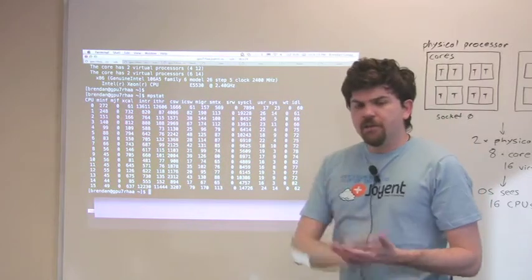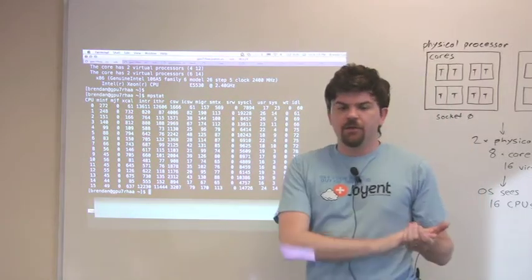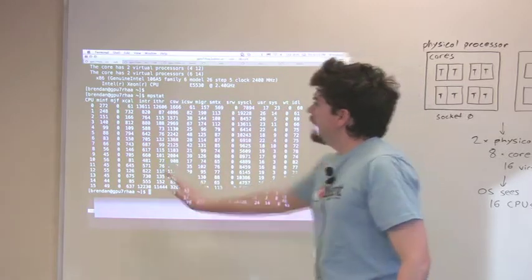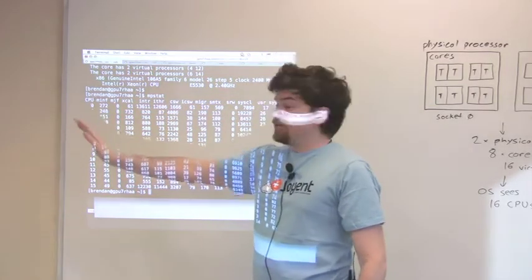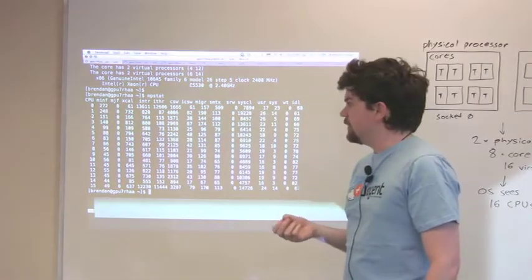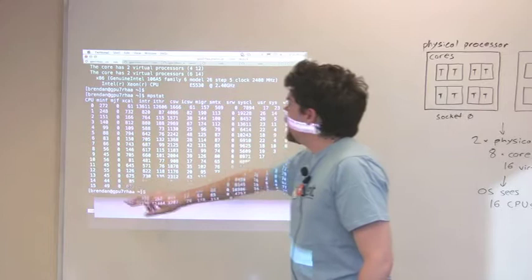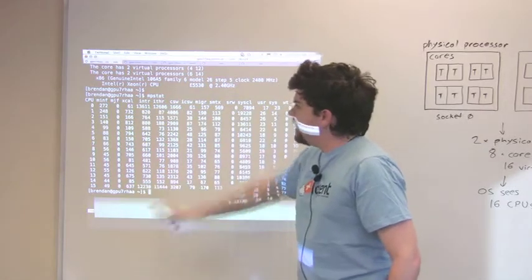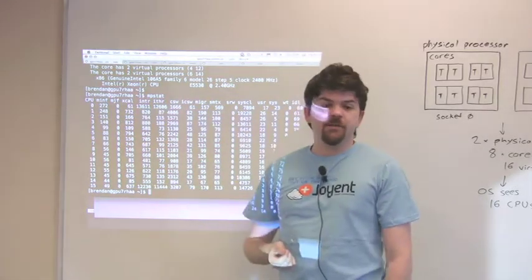So I said I'd go through six columns quickly, and then I'll go through them in more detail. They are, and these are the six most useful columns I'd like you to consider. The first is the CPU itself, which is the logical CPU identifier. The second is xcal. Xcal is for CPU cross calls.